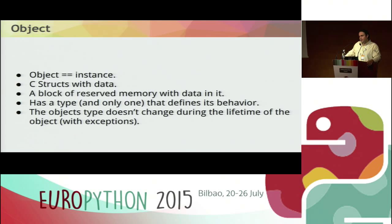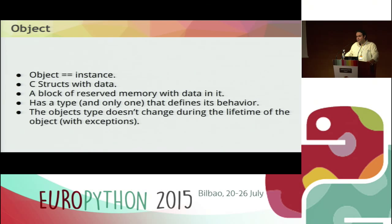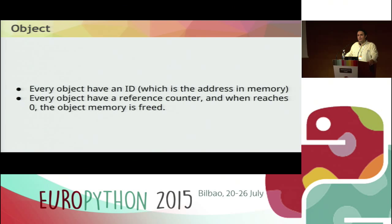Every object in CPython is an instance — it's a structure stored somewhere in memory. Every object has a type and only one type, and the type of the object never changes during the lifetime of the object. Every object has an ID, which is the address in memory. And every object in CPython has a reference counter. When the reference counter reaches 0, the object is freed.